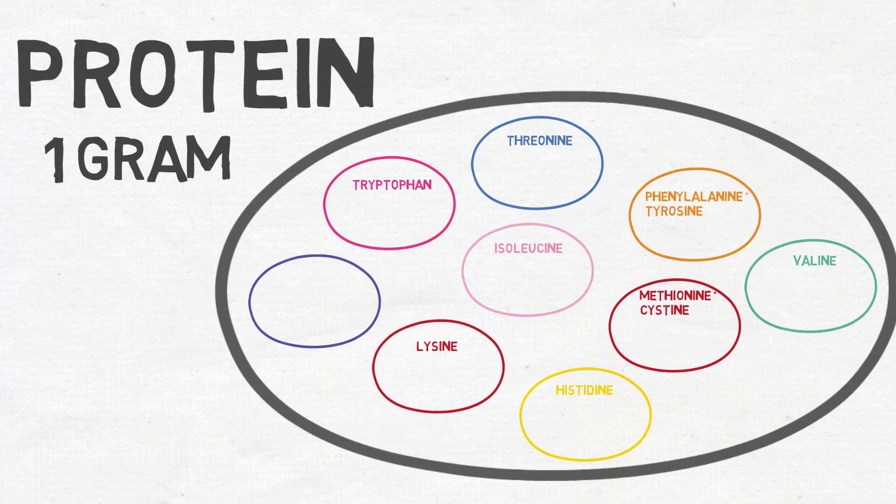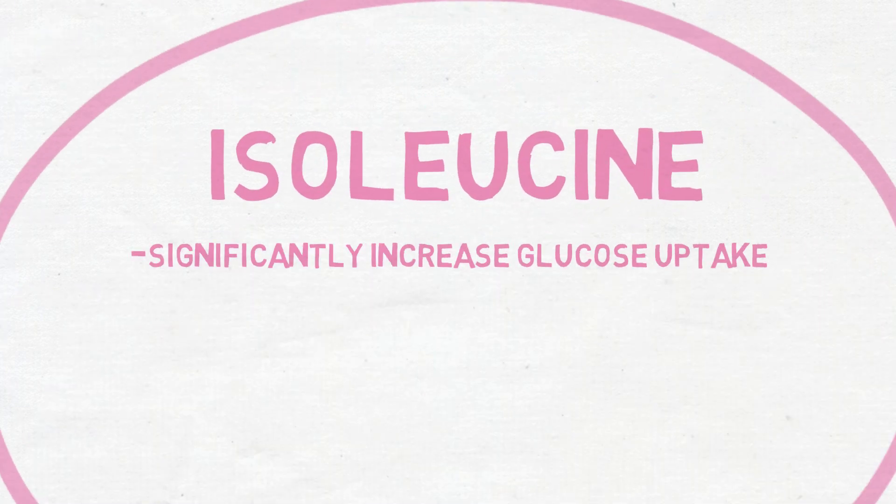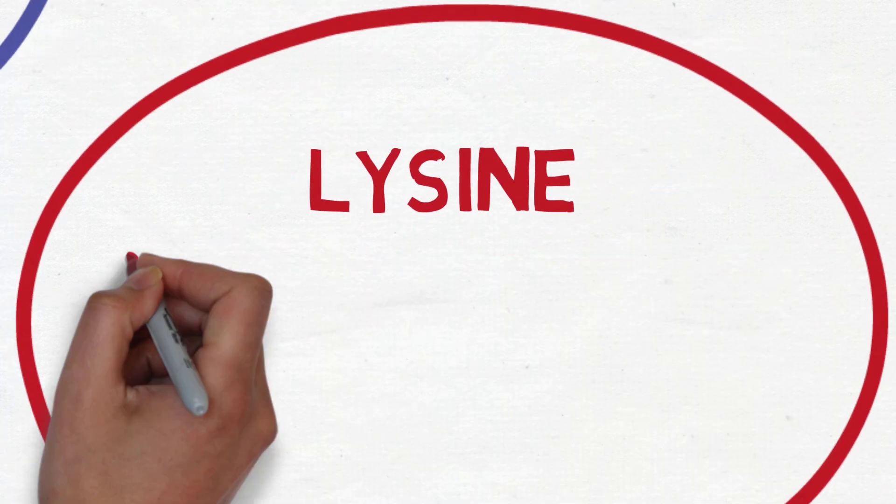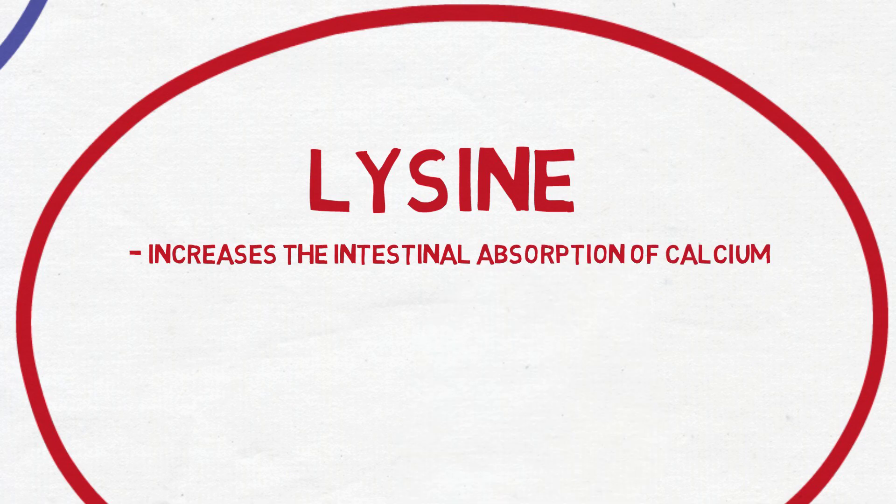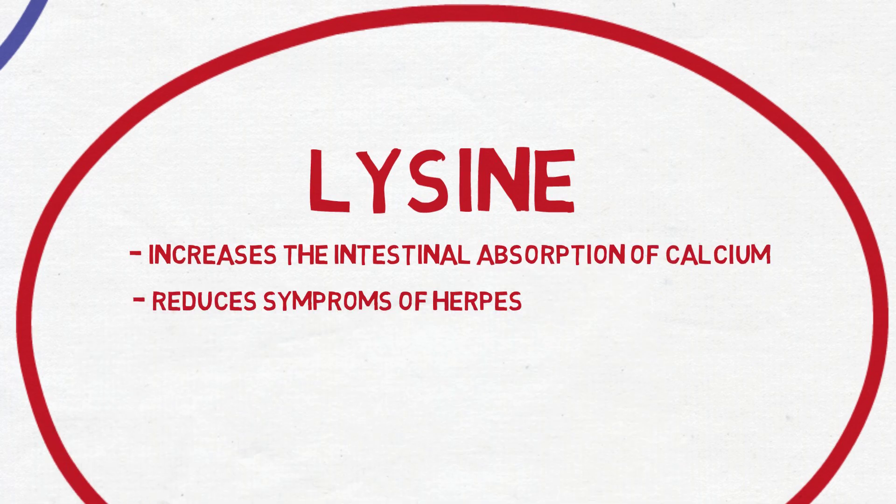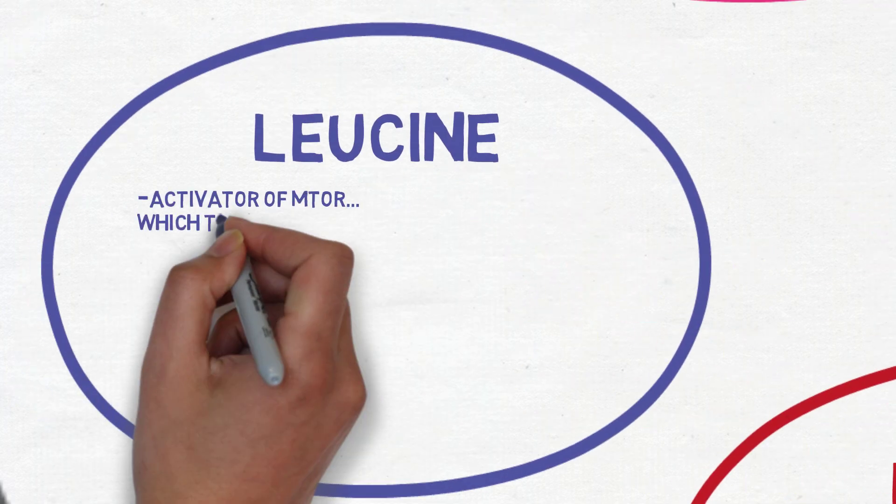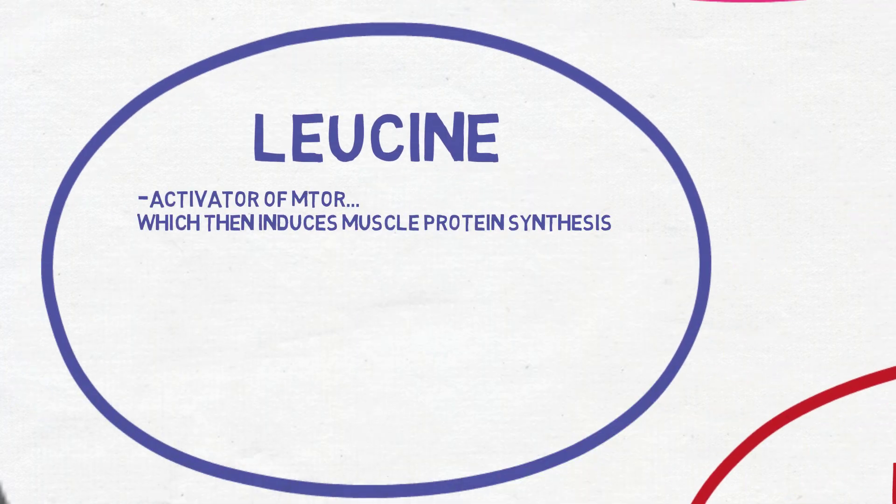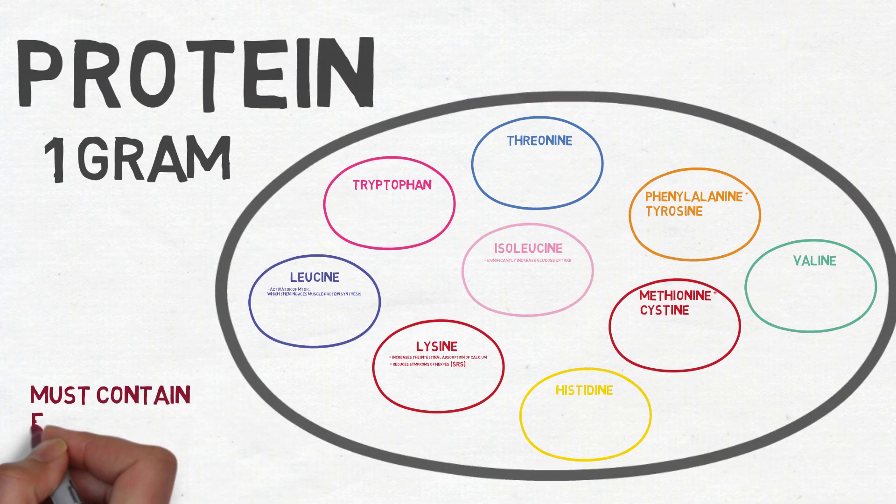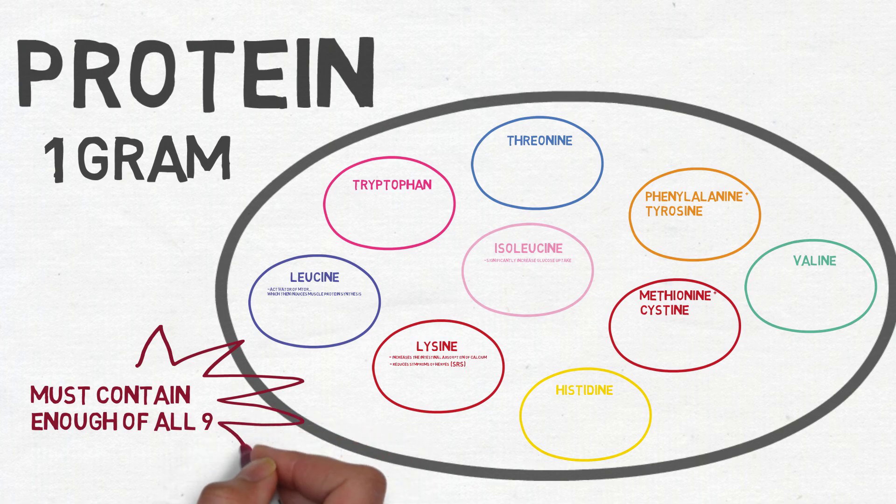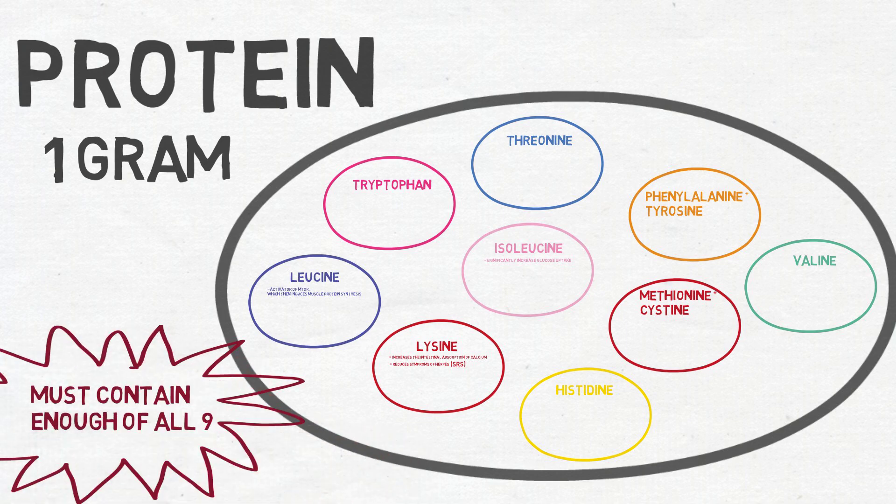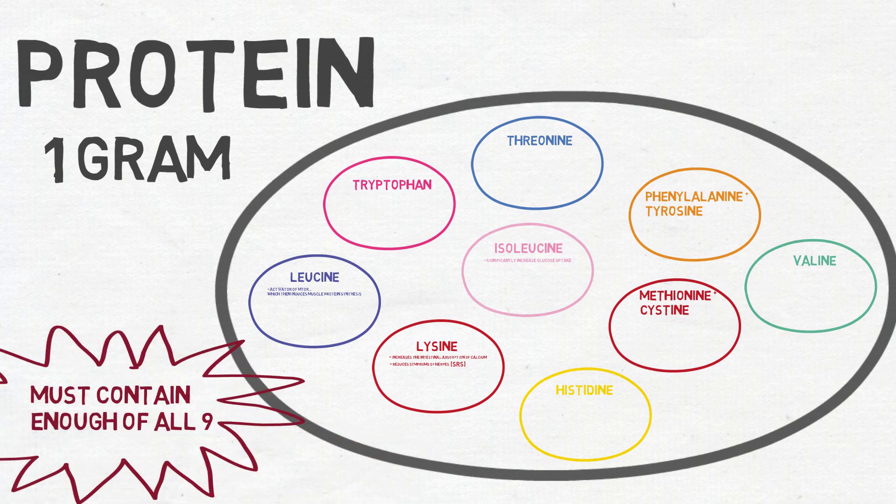All of these amino acids serve different purposes in the body. Because of this, in order for a food to be considered an adequate protein source, a food needs to contain all nine of the essential amino acids necessary for the dietary needs of humans. As I said, each of these essential amino acids have a different function in the body.